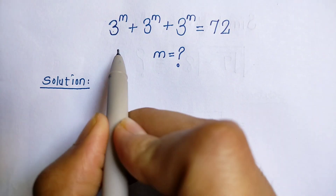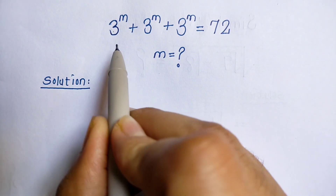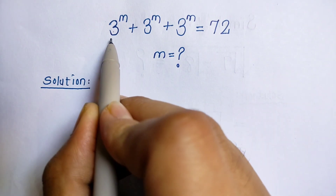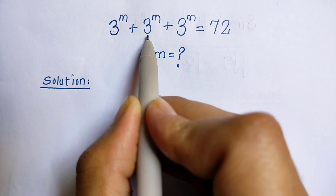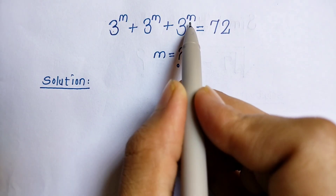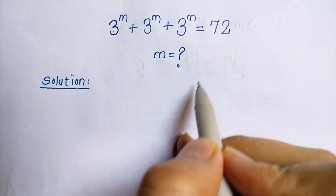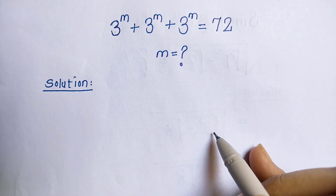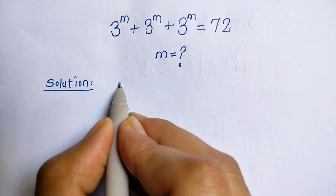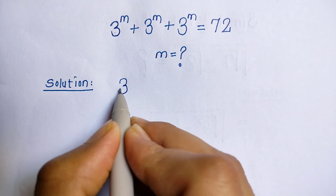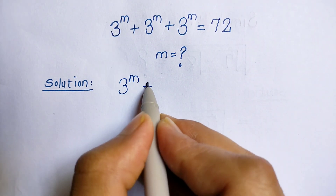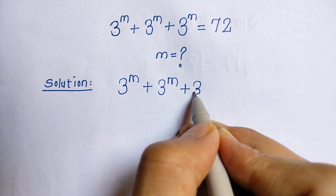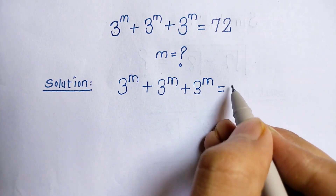Hello everyone, we have a nice exponential question: 3 to the power m plus 3 to the power m plus 3 to the power m is equal to 72. In this question we have to find the value of m.